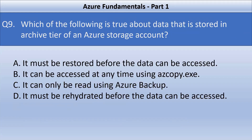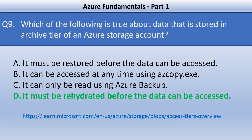Next question: which of the following is true about data stored in the archive tier of an Azure storage account? The correct answer is that it must be rehydrated before it can be accessed. Archive tier is an offline tier optimized for rarely accessed data with flexible latency requirements on the order of hours. Data should be stored for a minimum of 180 days. To read or download it, you must first rehydrate to an online tier — either hot or cool — which can take up to 15 hours depending on the priority specified.